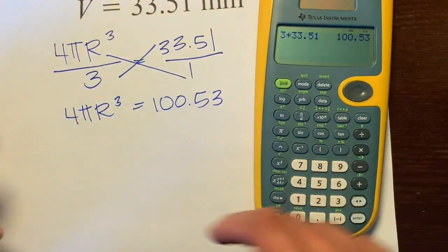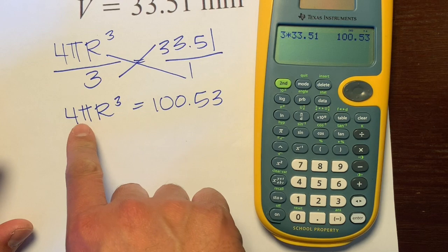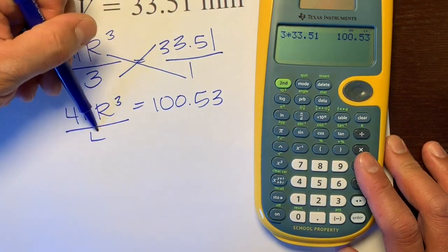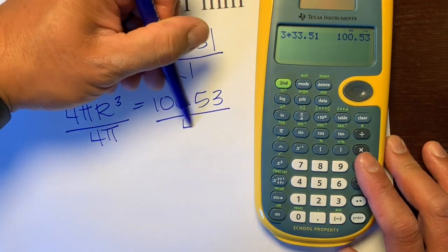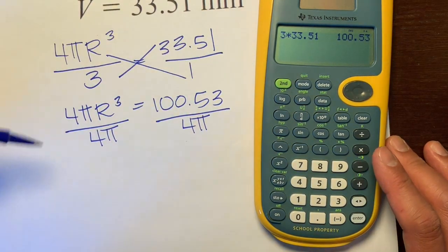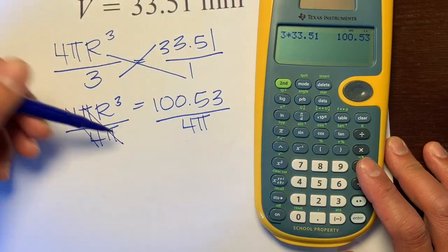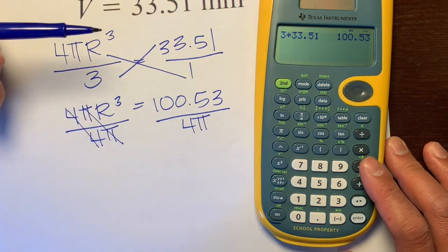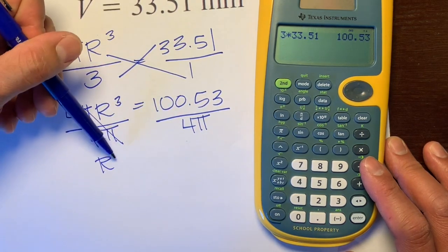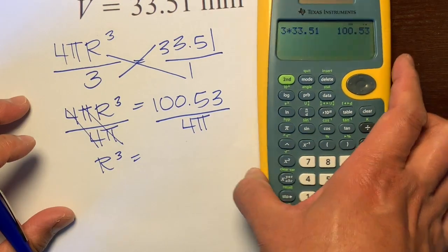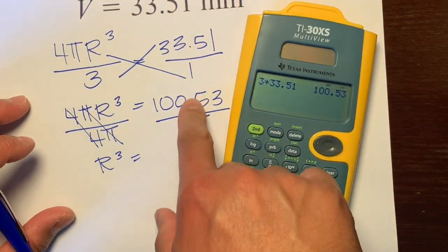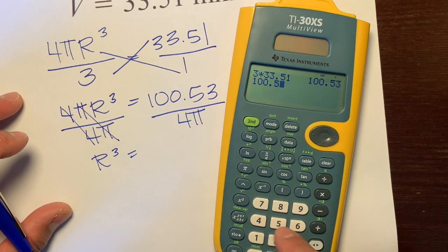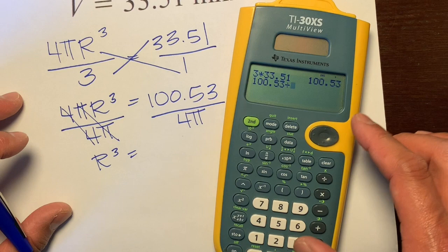So next step: this is 4 times π times r³. The opposite of multiplication is division, so we'll divide both sides by 4π. The fours cancel out, the πs cancel out. There's no π over here to cancel this π, so we're going to leave that there. We have r³ equals—now when we put this in our calculator, we're going to type 100.53 divided by...